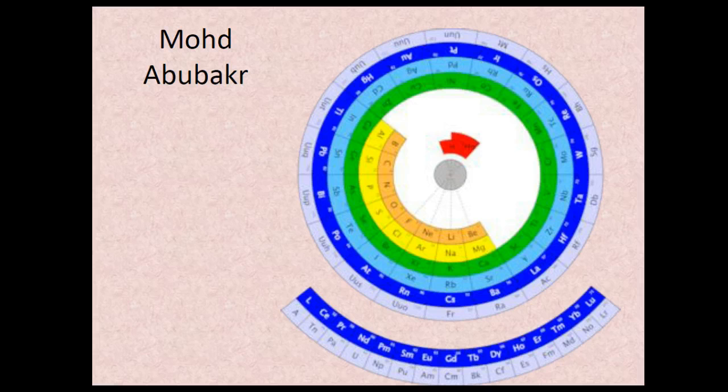Here is another one, a variation of the circular, but they also have the lanthanide and actinide series pulled out. Again, this one starts in the center.